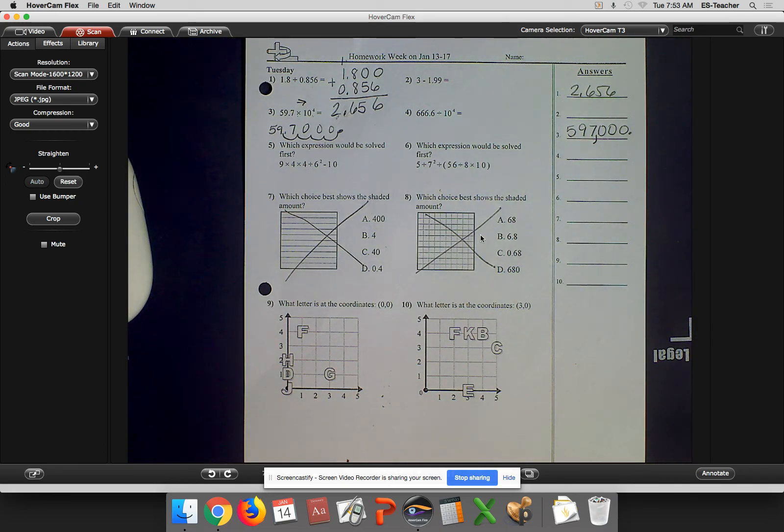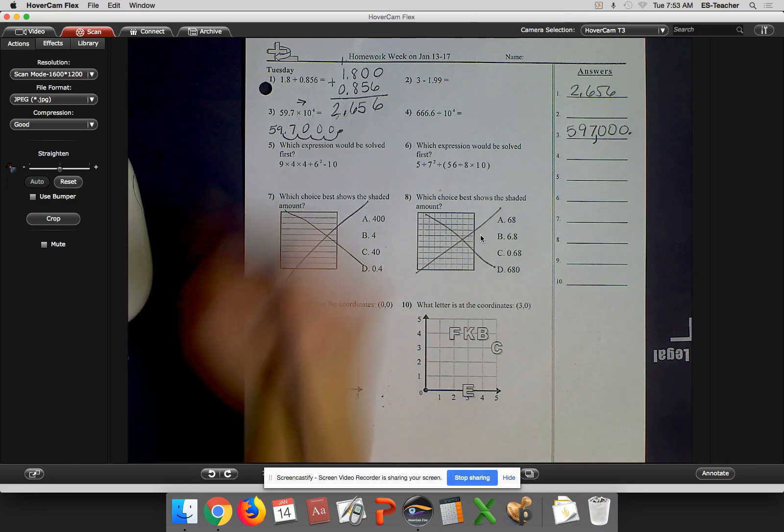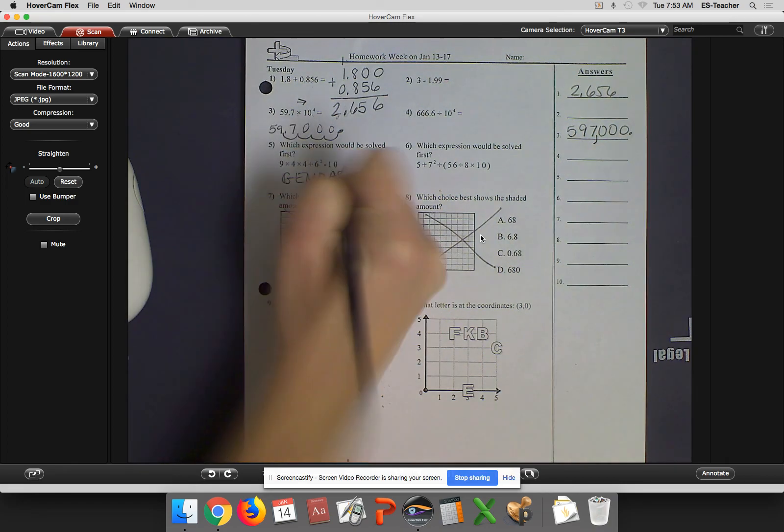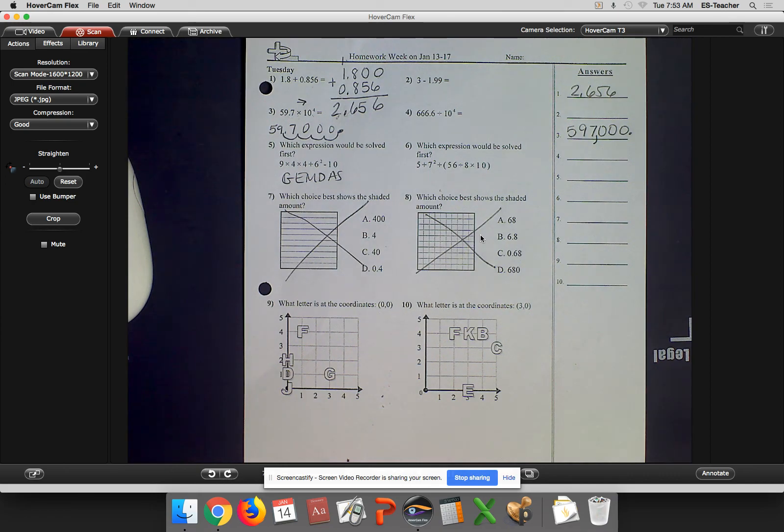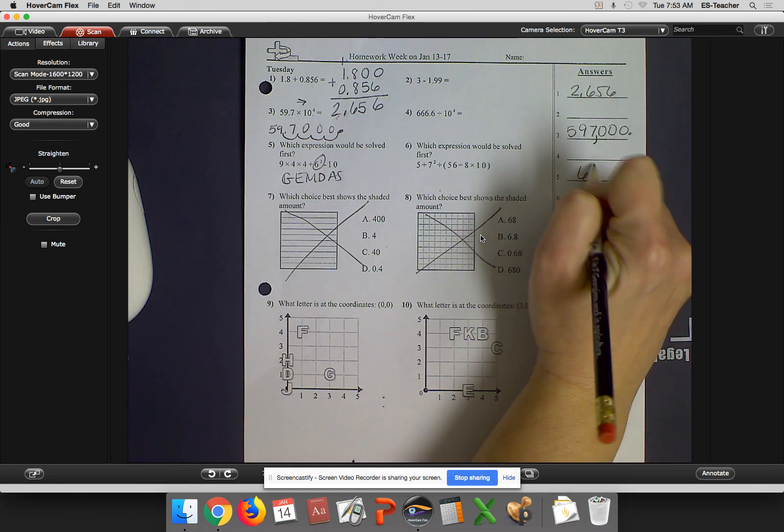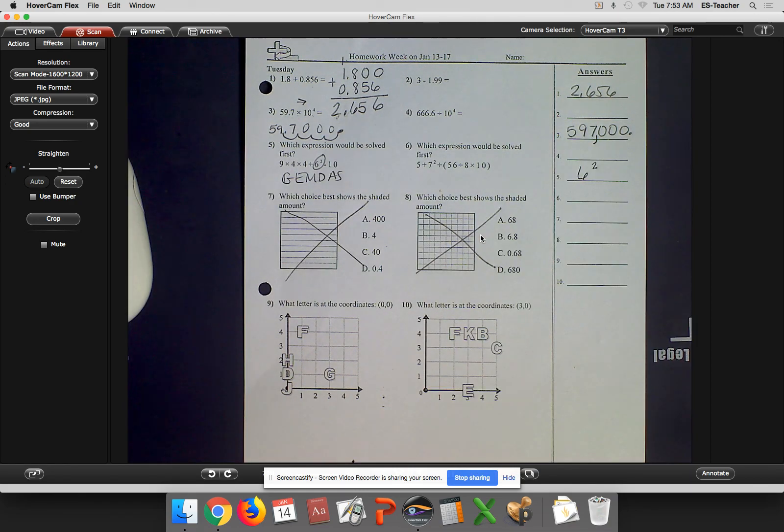All right, number 5, you need to make sure you're reading the directions. It says which expression would be solved first. It's not asking you to solve this. It's asking you what would you do first. So I know my rules of GEMDOS, right? Grouping symbols, exponents, multiplication, division, and subtract. So I don't see any grouping symbols. Do I see any exponents? Yes. So what I'm going to do first is 6 squared. That's what I'm going to do first.